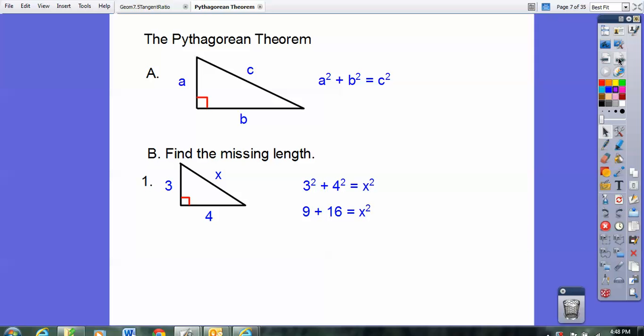3 squared is 9, 4 squared is 16, 9 plus 16 is 25, and when you square root 25, you get X equals 5. It's a 3, 4, 5 right triangle.